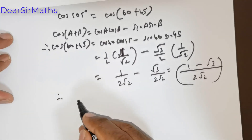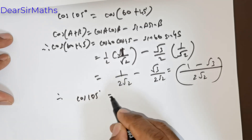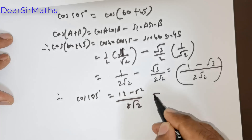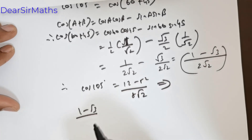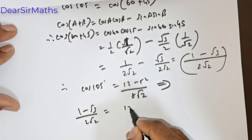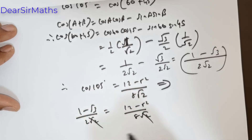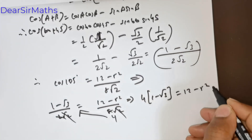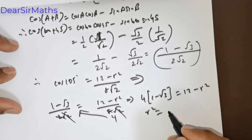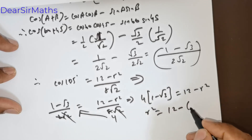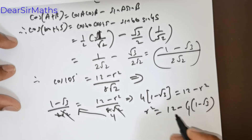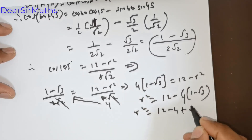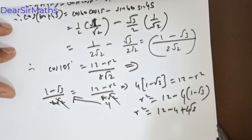So cos 105 equals (1 minus √3) over 2√2, which equals (12 minus R²) over 8√2. The √2 cancels and 2 divides into 8 four times. Cross-multiplying: 4 times (1 minus √3) equals 12 minus R². I want R squared positive, so R squared equals 12 minus 4(1 minus √3).